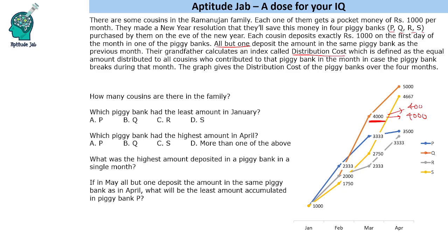If there are three people, each one gets 4000. So one thing we can figure out — these are multiples of three. By basic arithmetic calculation you should know this. So now we need to find out how many cousins are there in this family and subsequently who deposited in which bank in which month.